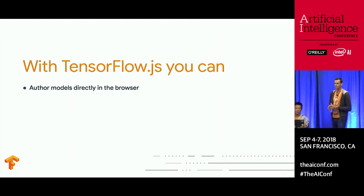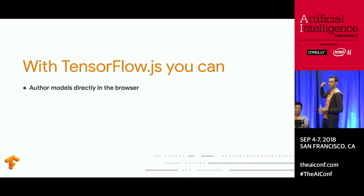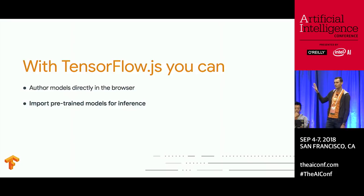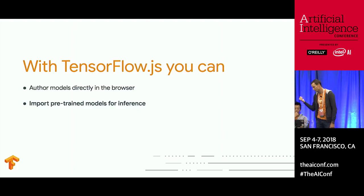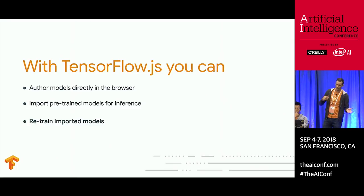What can you do today with TensorFlow.js? You can author small models directly in the browser — browsers have limited resources, but pure model training in the browser is supported. You can import pre-trained models trained elsewhere, usually in the cloud on Python, and we have a tool to serialize the model and run inference in Node or the browser. We also have the ability to retrain models through basic transfer learning, similar to TensorFlow for Poets.